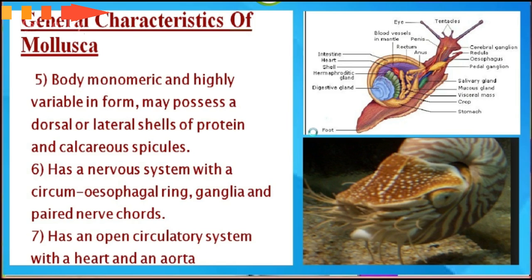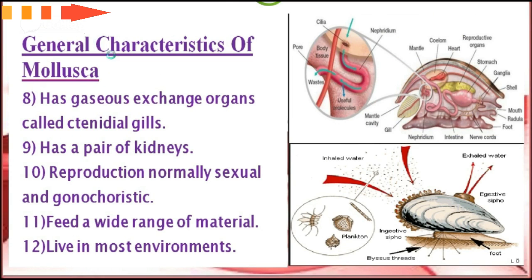You can see its complete anatomy here. The next characteristic is a gaseous exchange organ system called ctenidia gills. It has a pair of kidneys. Reproduction is normally sexual and gonochoristic. Mollusca feed on a wide range of materials and live in most environments.